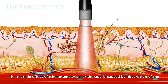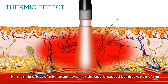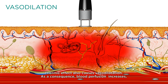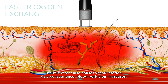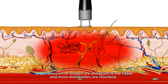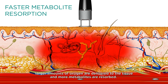The thermic effect of high-intensity laser therapy is caused by absorption of the 1064 nanometer laser beam in the superficial structures, which consequently causes a temperature increase in the tissue. The thermic effect also causes vasodilation. As a consequence, blood profusion increases, larger amounts of oxygen are delivered to the tissue and more metabolites are absorbed.